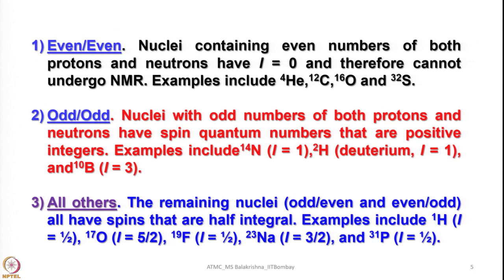For odd-odd nuclei — those with odd numbers of both protons and neutrons — the spin quantum number is a positive integer. For example, 14N has I equals 1, 2H (deuterium) has I equals 1, and 10B has I equals 3. The remaining nuclei with odd-even or even-odd combinations have half-integral values for nuclear spin: 1H has I equals 1/2, 17O has I equals 5/2, 19F has I equals 1/2, 23Na has I equals 3/2, and 31P has I equals 1/2.